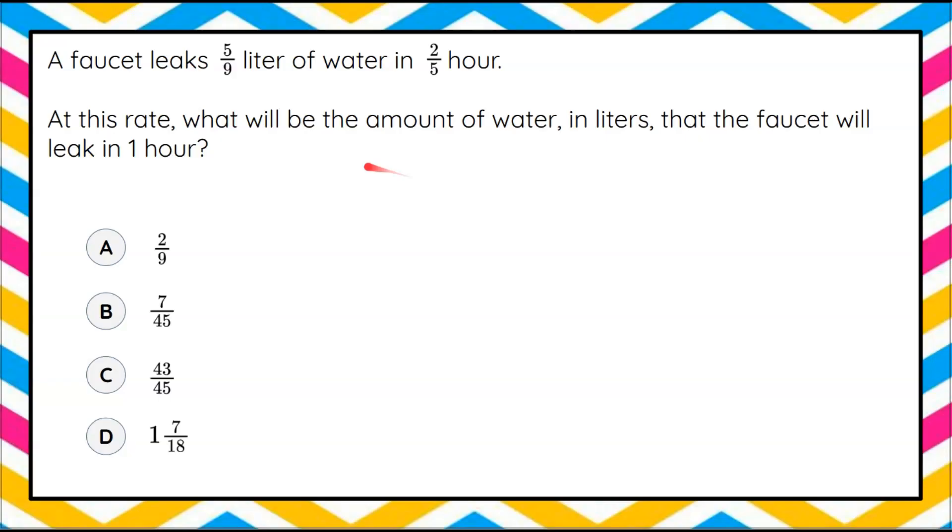We have a faucet that leaks five-ninths of a liter of water in two-fifths of an hour. At this rate, what will be the amount of water in liters that the faucet will leak in one hour?